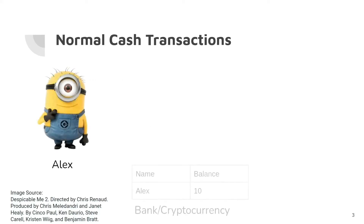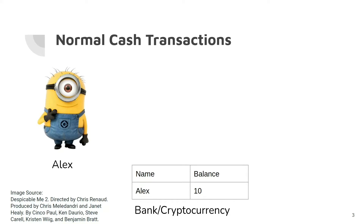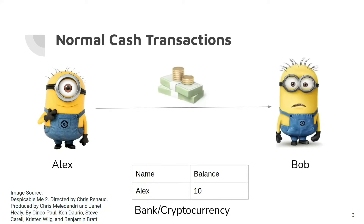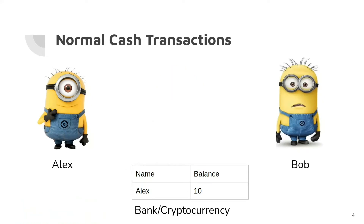Typical cash systems store coin balance in plain text. For example, there's Alex who earns 10 coins. Alex wants to send these 10 coins to Bob. To do that, Alex sends a transaction saying 'send 10 coins to Bob' with his signature. Then the cash system verifies the transaction, and if the transaction is valid, they transfer coins to Bob.